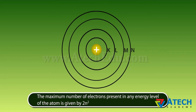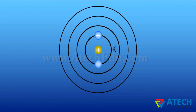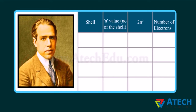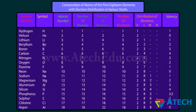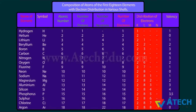The maximum number of electrons present in any energy level is given by 2n². For example, in the first energy level K, n = 1, hence 2n² = 2. The maximum number of electrons in the outermost orbit is 8. Electrons are filled in a stepwise manner — first to K shell, then L shell, then M shell, and so on.